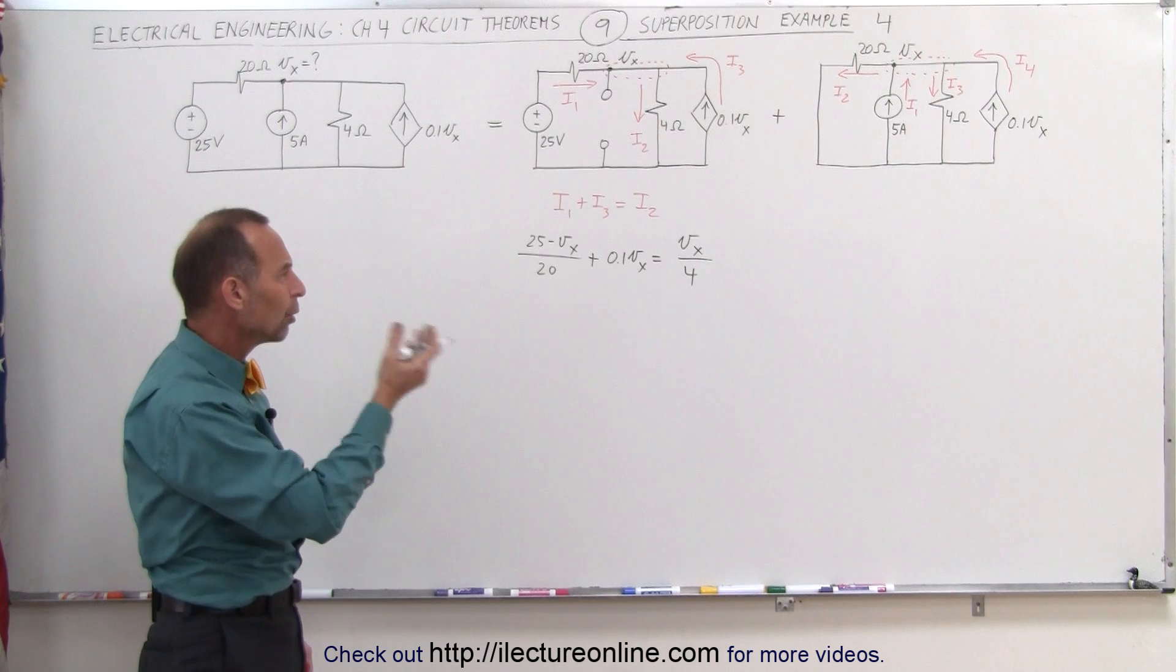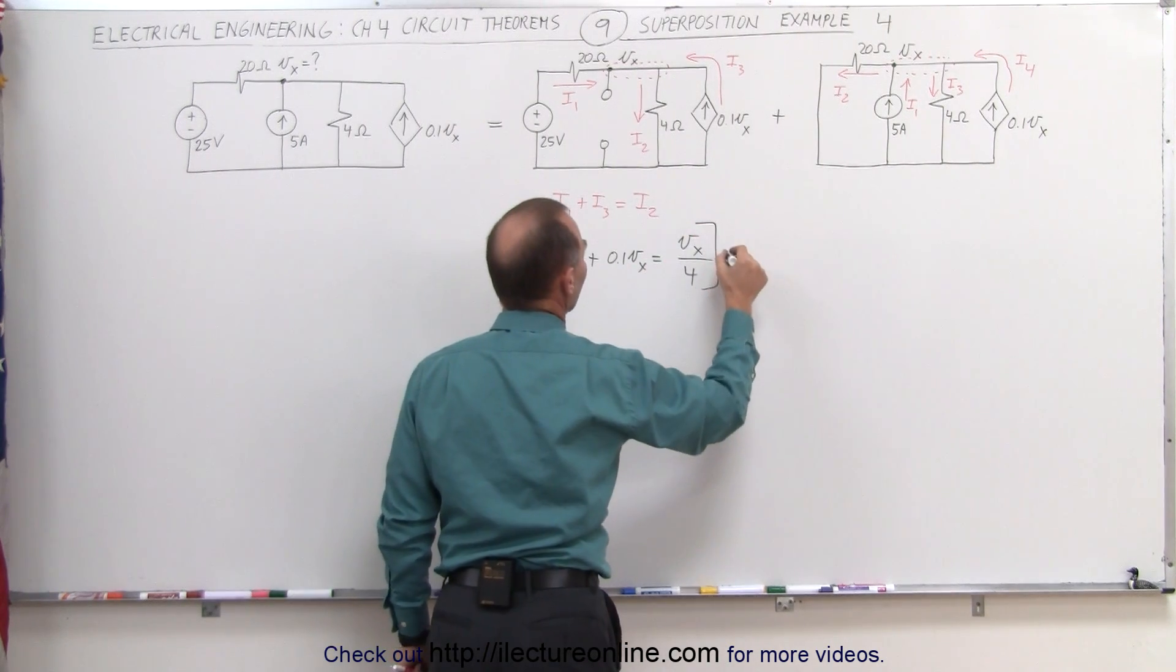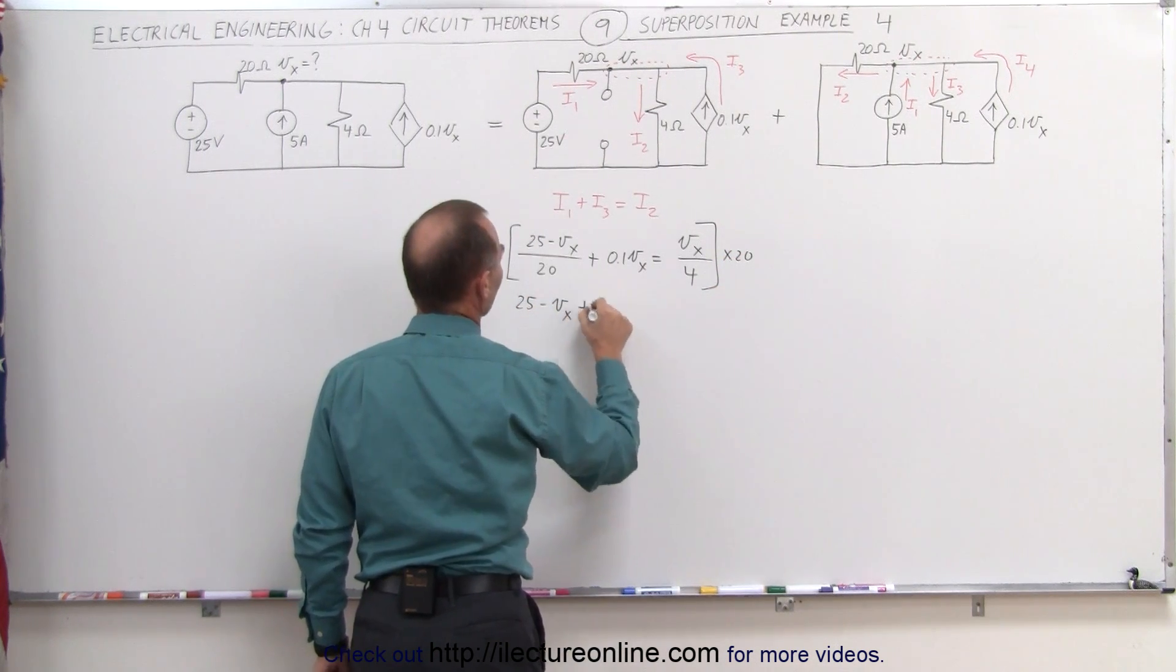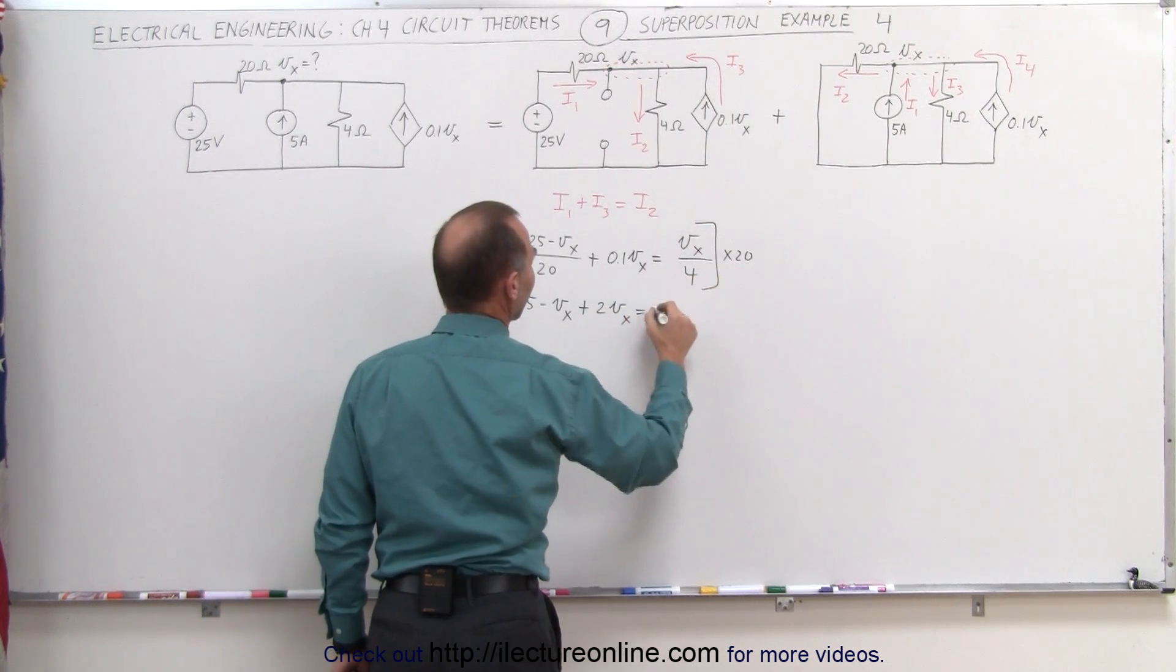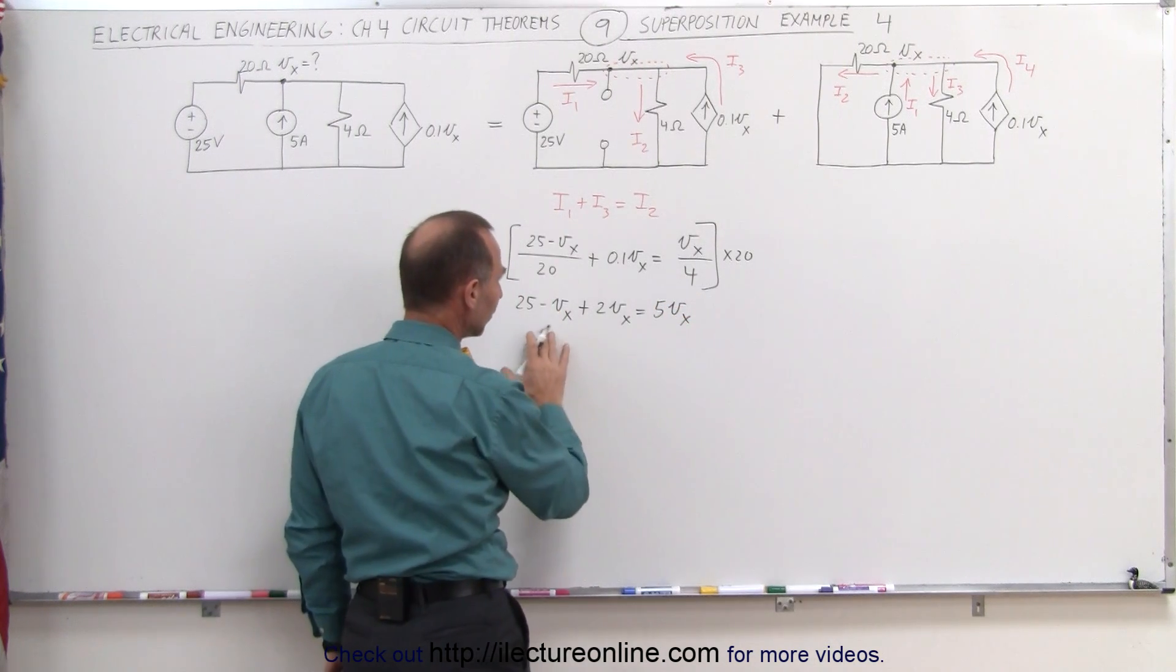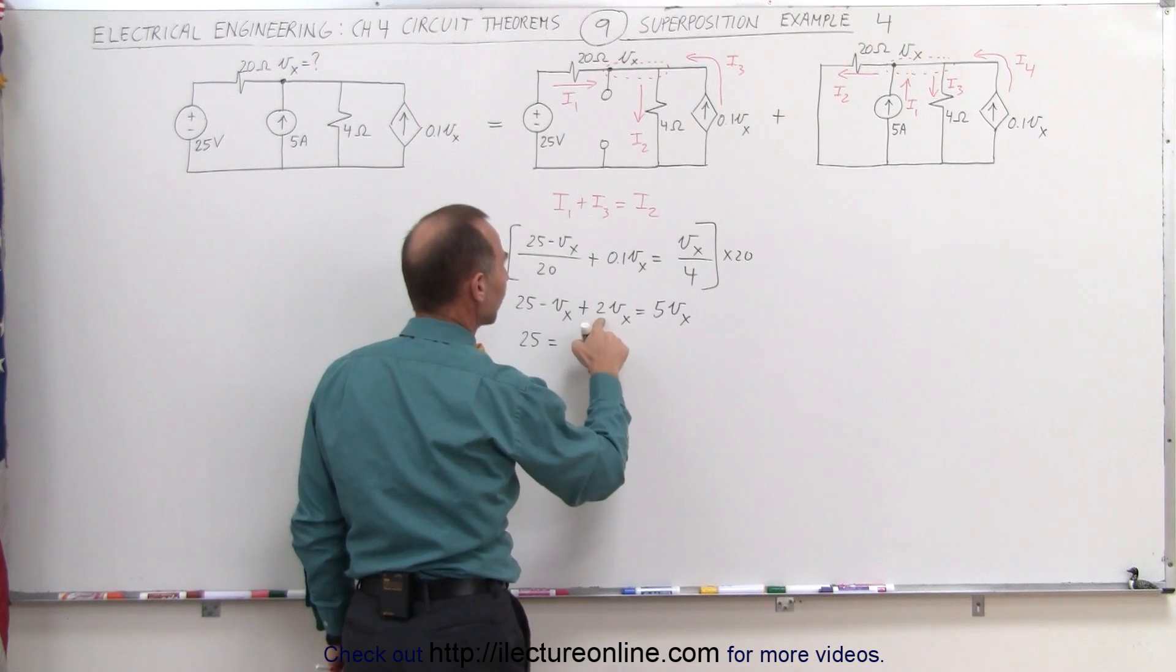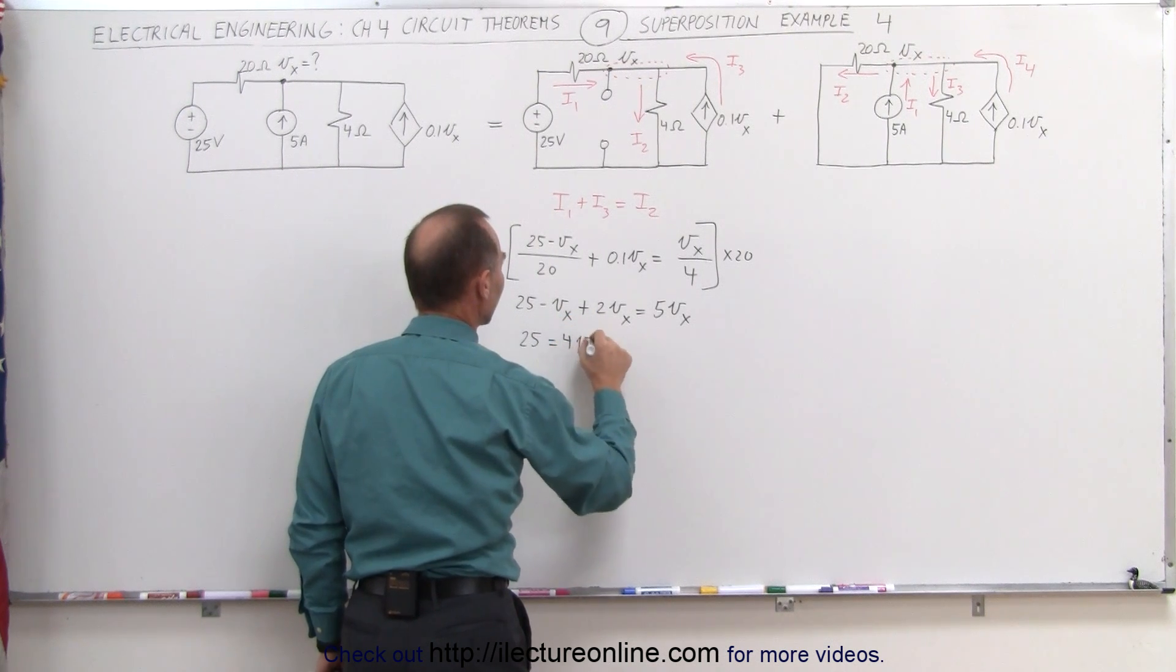We're going to multiply both sides of the equation by 20. Let's do that, multiply both sides by 20. That means we get 25 minus V sub X plus 20 times 0.1 is 2 V sub X equals 4 goes on 25 times 5 V sub X. Move all the V sub X is to one side, that means we have 25 is equal to 5 minus 2, that's 3 plus 1, that's 4, 4 V sub X.